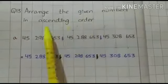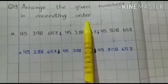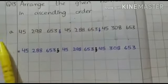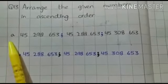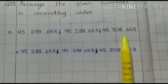Question 13, arrange the given numbers in ascending order. Ascending order means arranging numbers from smallest to greatest. So come to part A. We have 3 values in part A.